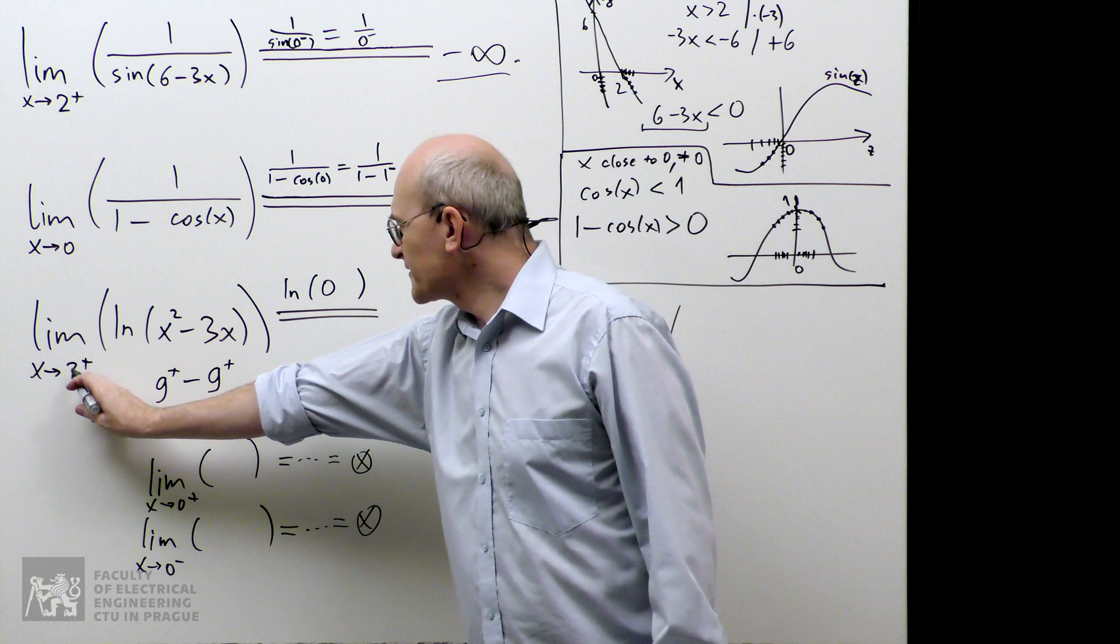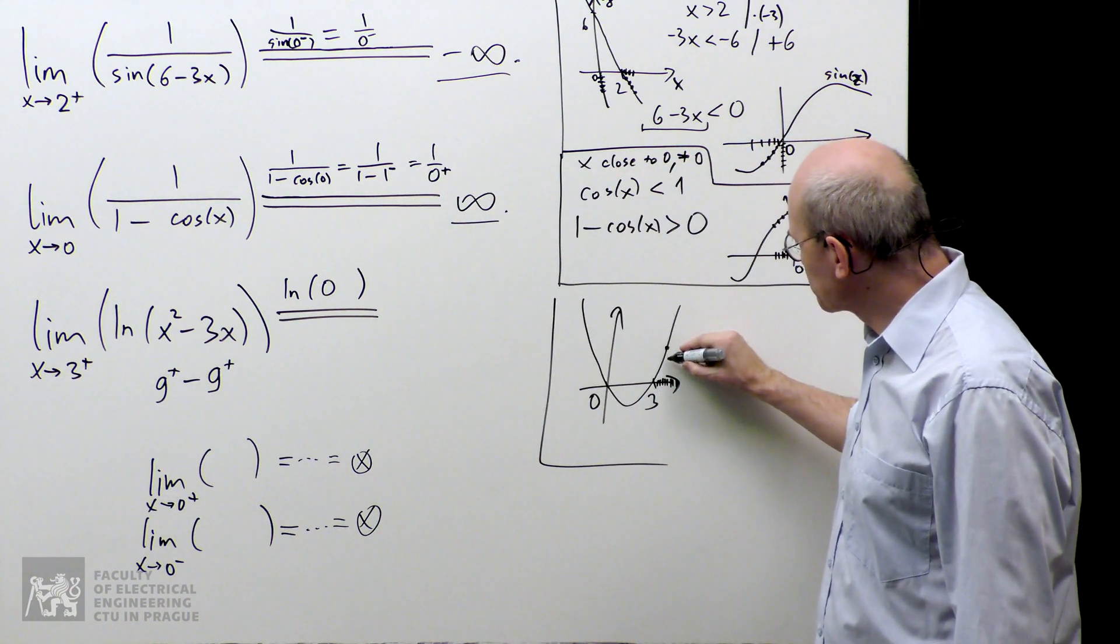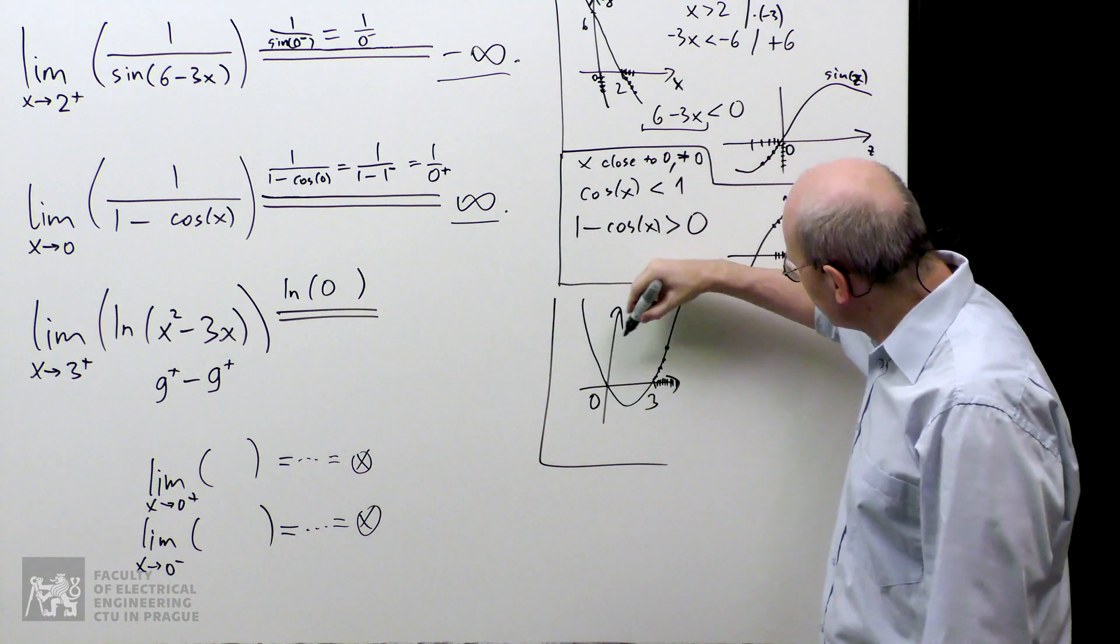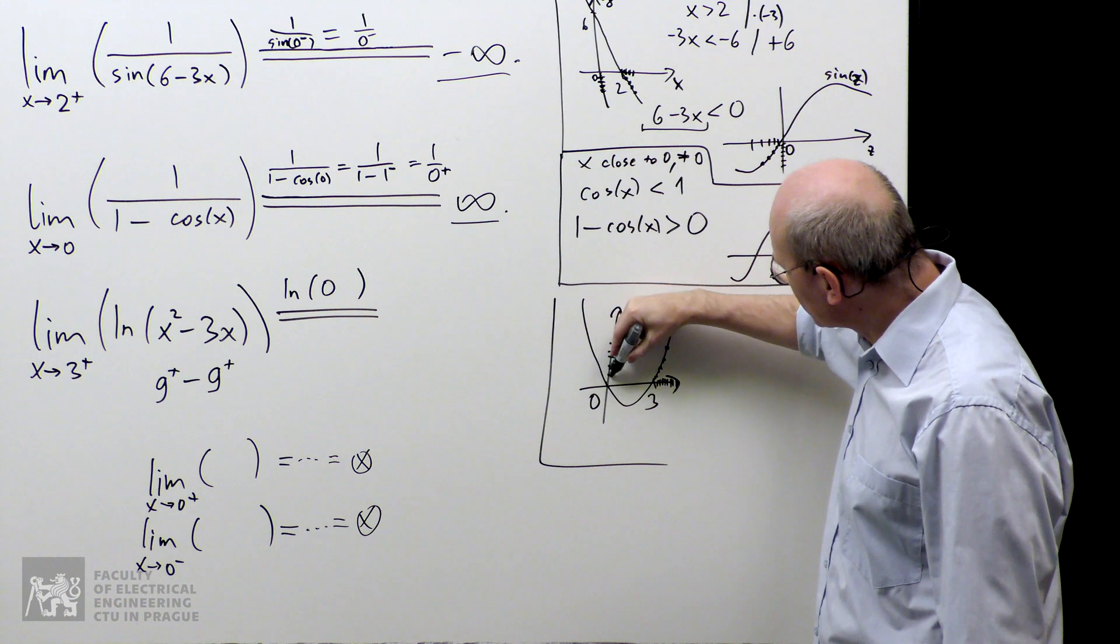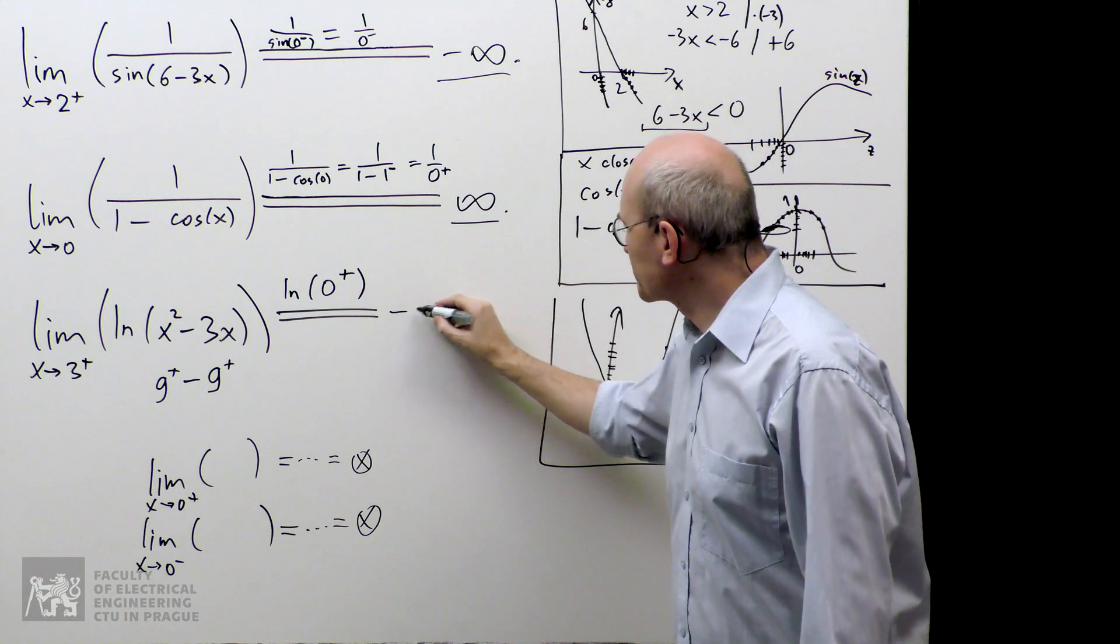Now, we are approaching 3 from the right. So, we are going this way. And the values of the parabola go down to 0, which makes sense. That fits. And they go there from the positive part. So, it's 0 plus. Yeah, it works. Now we can write the answer.